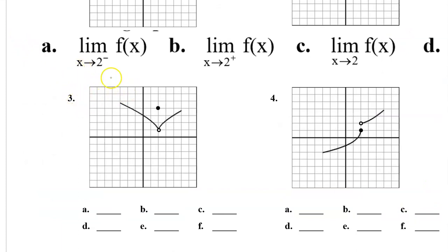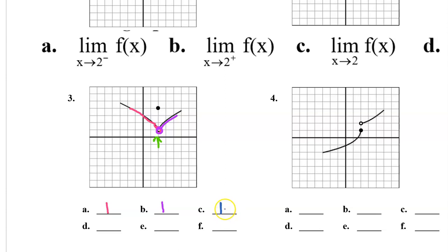Let's do problem number 3 starting with the x value of 2. The limit as x approaches 2 from the left — as we approach 2 from the left we are approaching a y value of 1. As we approach 2 from the right we are again approaching a y value of 1. Because the limit from the left and the limit from the right are the same, the overall limit as x approaches 2 is also 1.